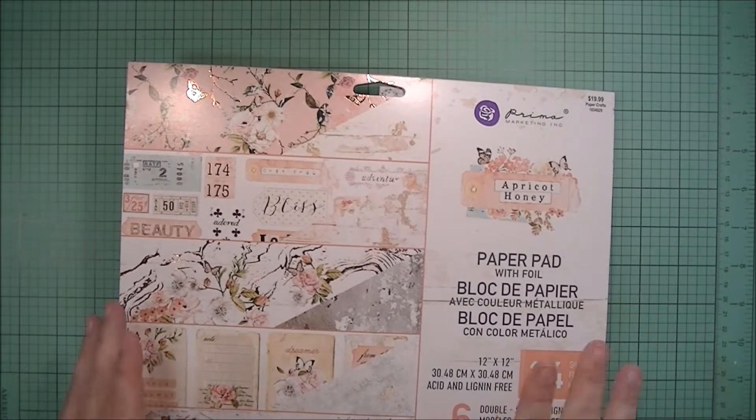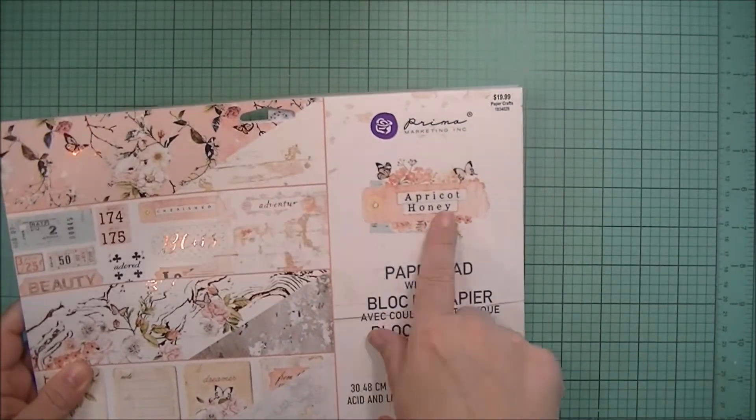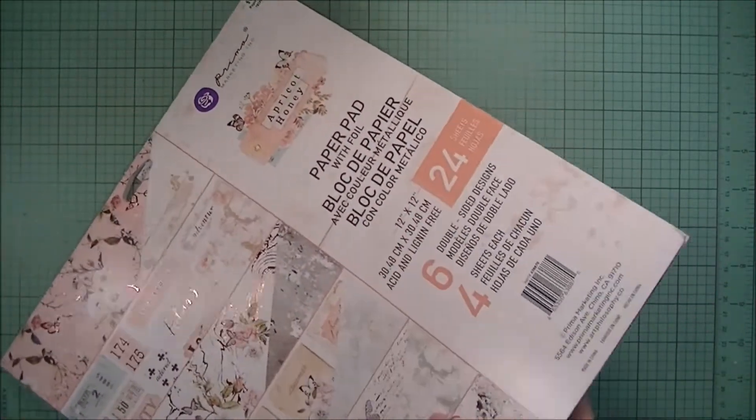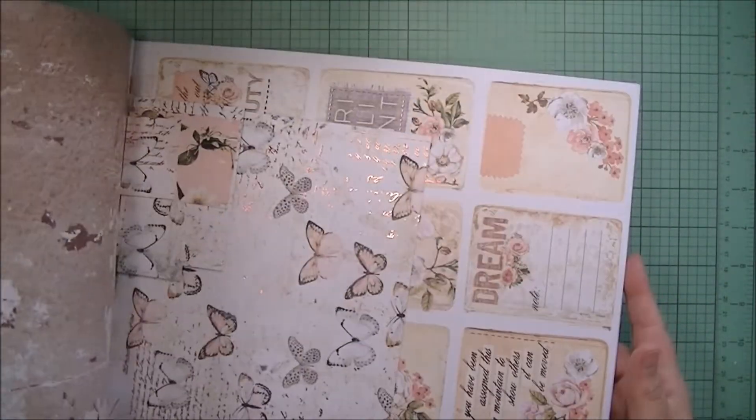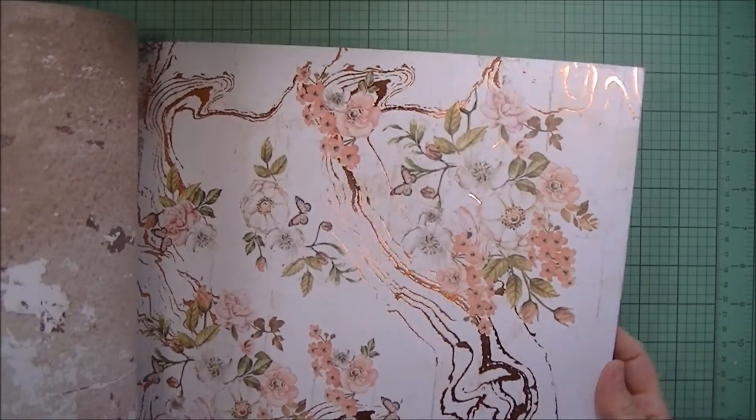I wanted to show you the paper that I used for the project first. I used the Prima Apricot Honey. This is such a pretty paper. If you haven't seen it yet you should definitely check it out. Hobby Lobby is carrying this one.